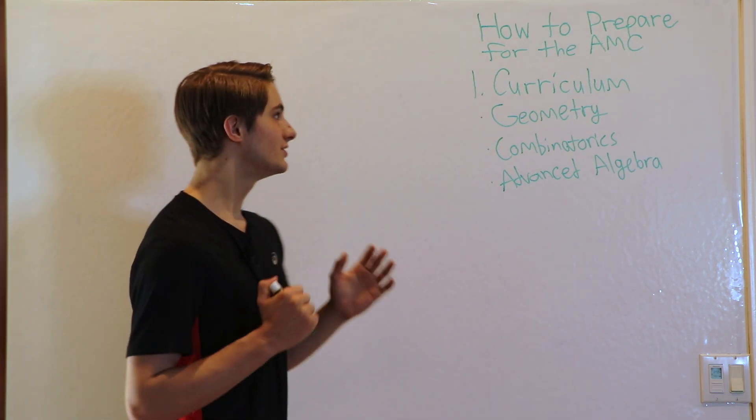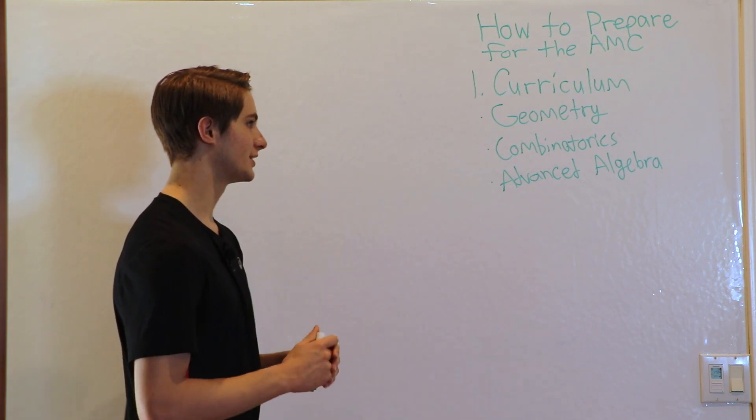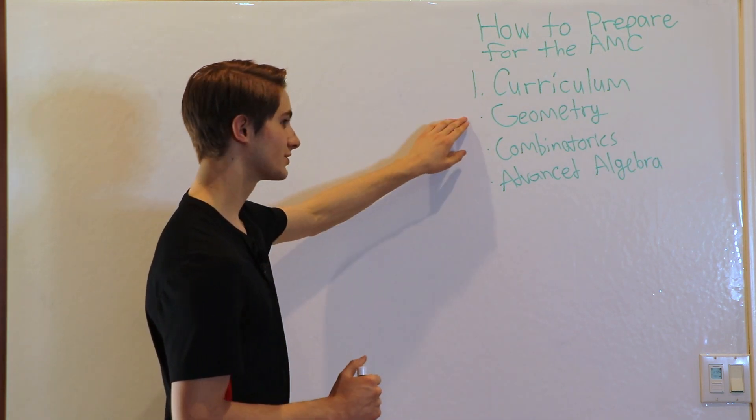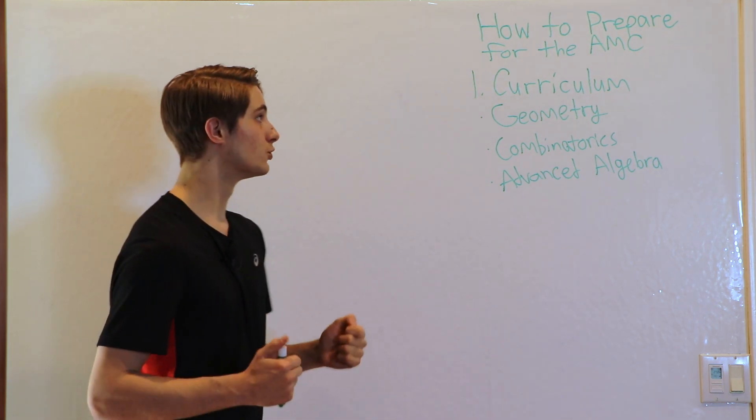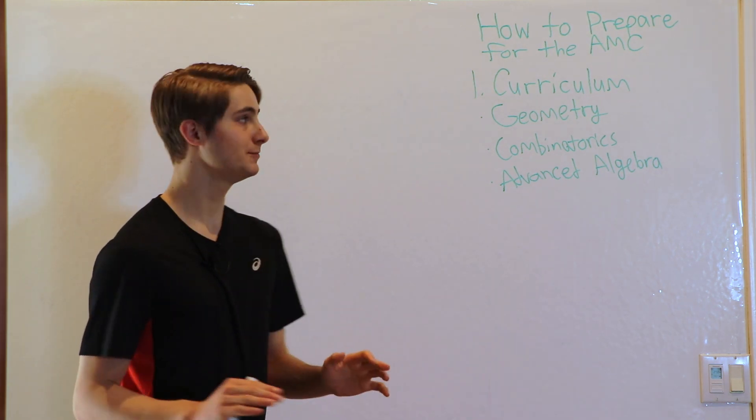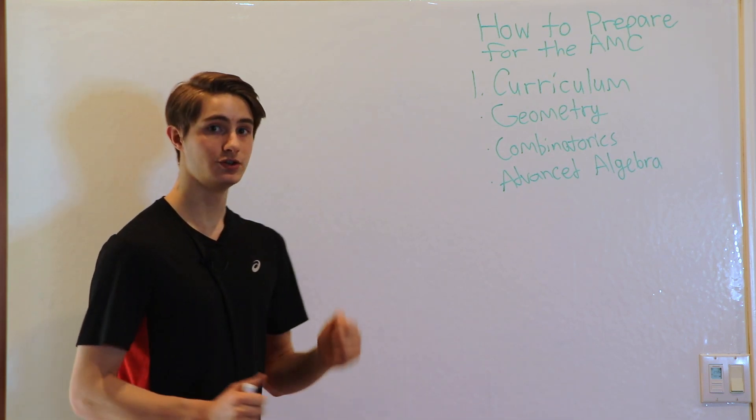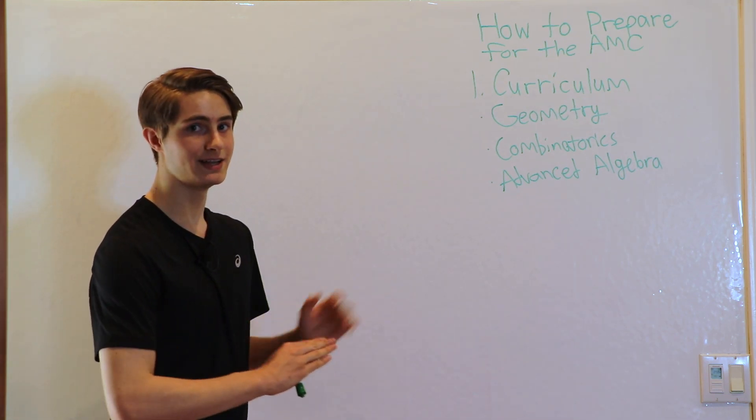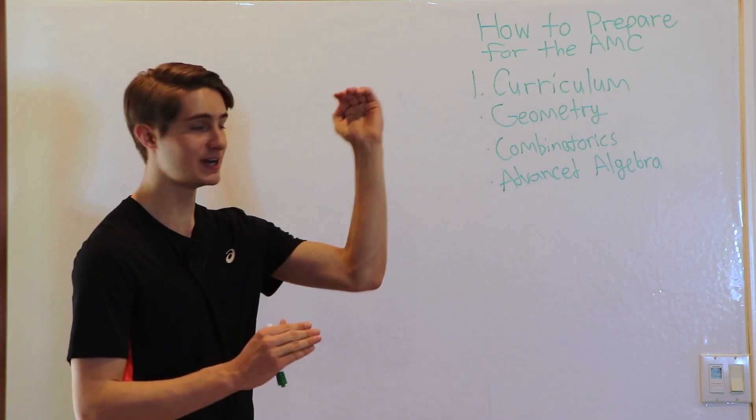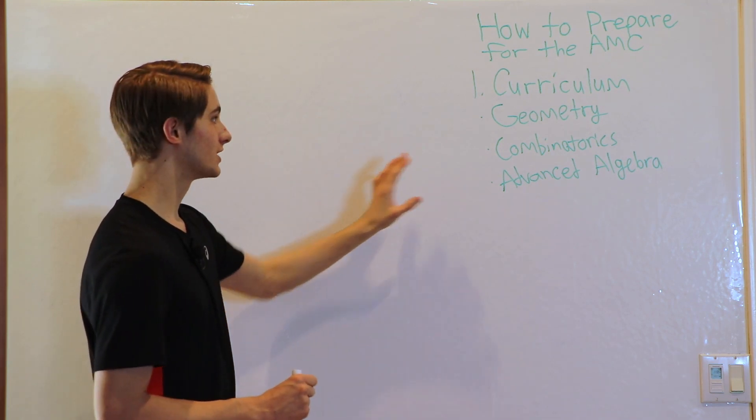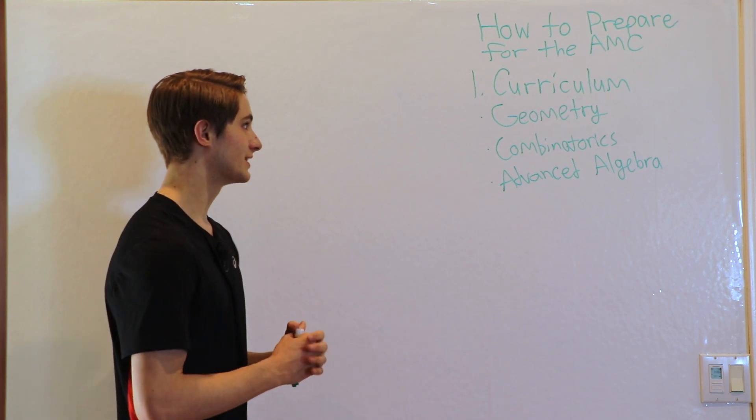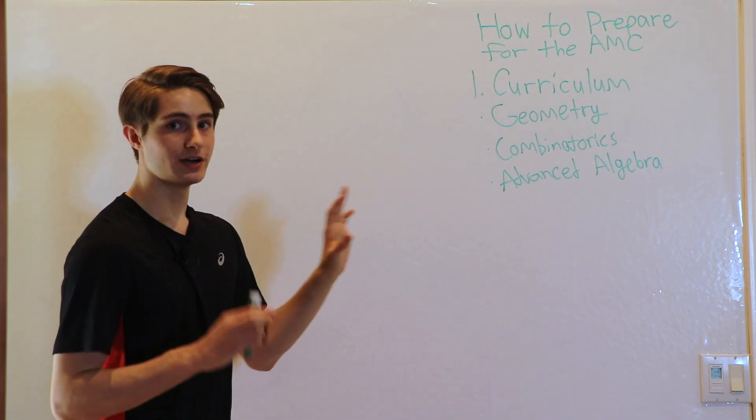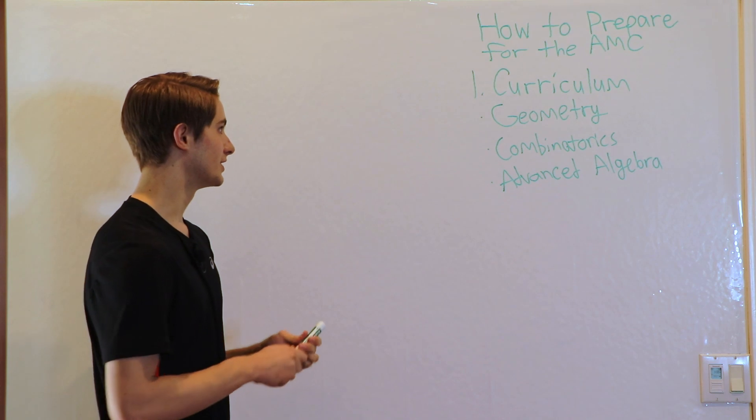You don't need to know every single thing when it comes to these areas. You don't need to know about things like the power of a point or cyclic quadrilaterals in order to do well on the AMC. Now those will help you in some circumstances, and if you're already very good at taking the AMC and you want to get that extra edge, then I would recommend looking at some really advanced formulas, learning some shortcuts, and things like that. But if you're just starting out, just make sure you have a ground knowledge of these areas.